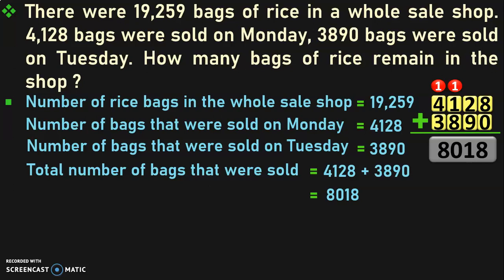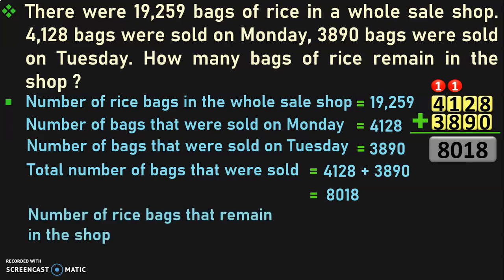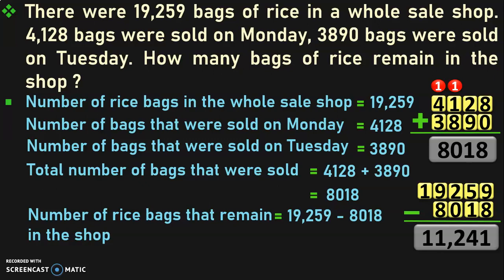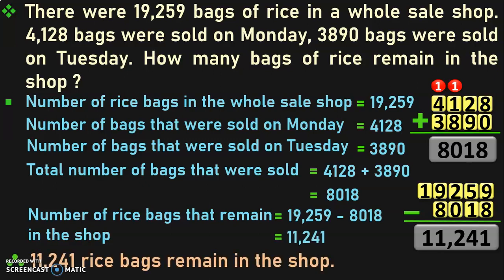Now, what do we have to find? Total number of rice bags that remain in the shop. We know the number of rice bags in the wholesale shop and also the number of bags that were sold. So, 19,259 minus 8,018. Write down the numbers at appropriate places and begin the subtraction from the ones place. 9 minus 8 is 1. 5 minus 1 is 4. 2 minus 0 is 2. 9 minus 8 is 1, and bring down the remaining digit to get the answer 11,241.